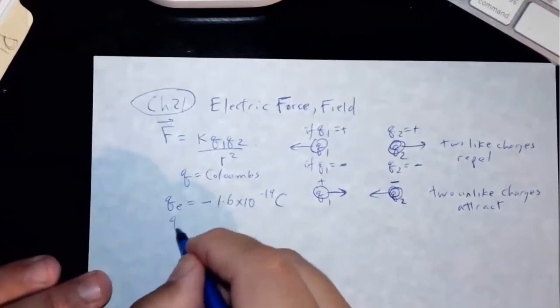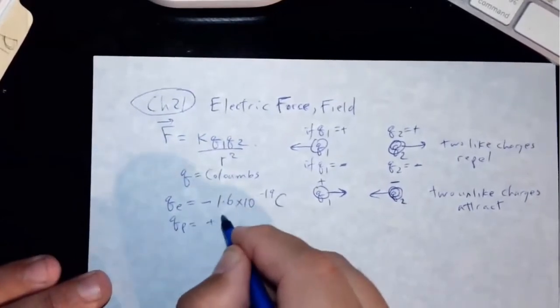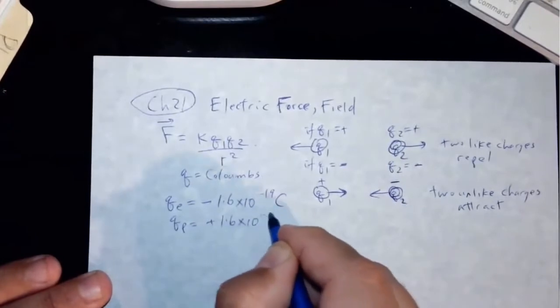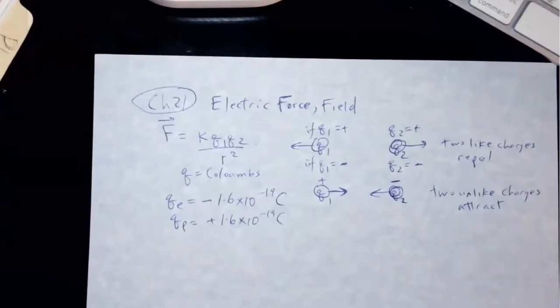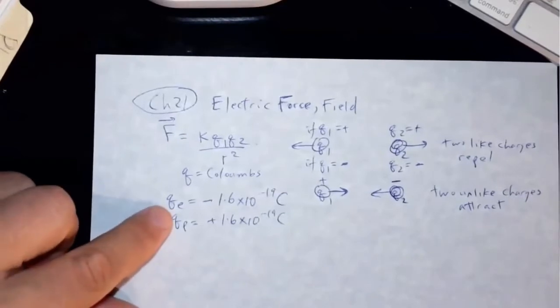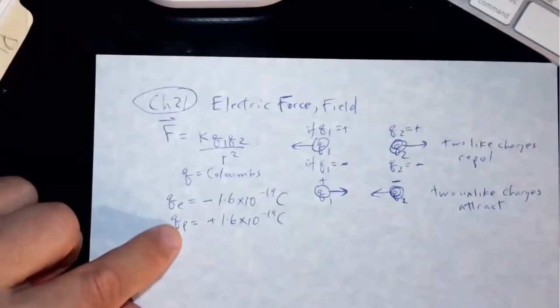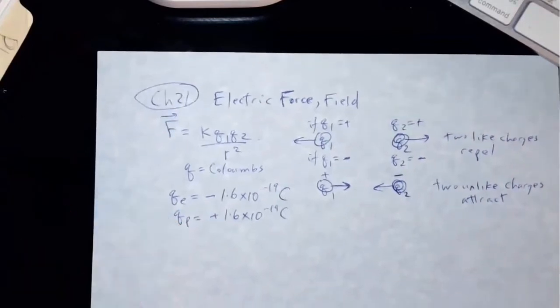And then the charge of the proton is positive 1.6 times 10 to the minus 19 Coulombs. So that's like the base unit of charge is the charge of the electron, the base unit of charge and the charge of the proton. I don't think anything less than that has really been discovered until now. In other words, the smaller charge than the charge of the electron.